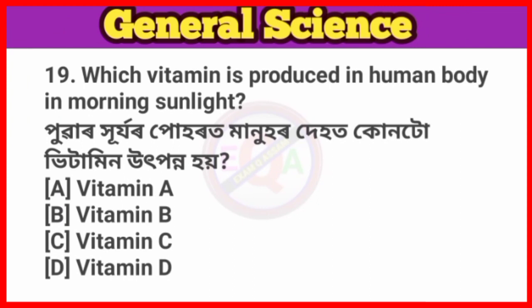Question No. 19. Which vitamin is produced in the human body in morning sunlight? Answer: Option D, Vitamin D.